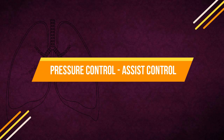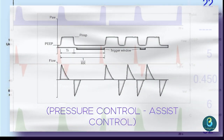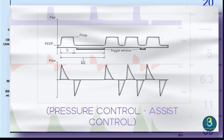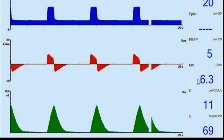Another mode is Pressure Control Assist Control. Every detected breathing attempt at PEEP level triggers a mandatory breath, so the patient determines the number of additional mandatory breaths. To give the patient sufficient time for expiration, it is not possible to trigger another mandatory breath immediately after a completed breath. If no mandatory breath has been triggered after the expiratory time completes, a mandatory breath is automatically applied at backup frequency, so the respiratory rate adjuster defines the minimum ventilation frequency.